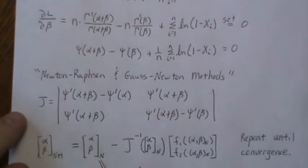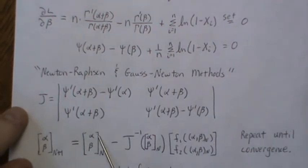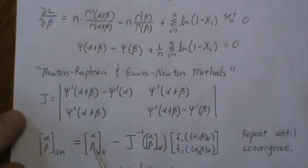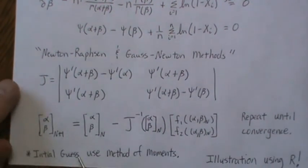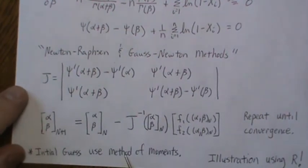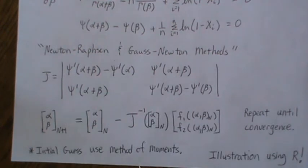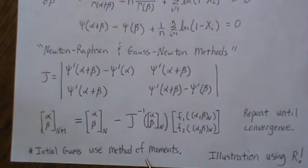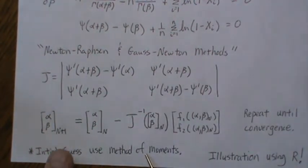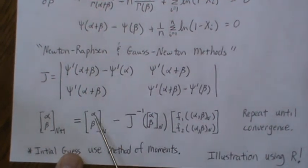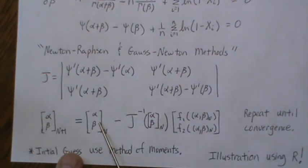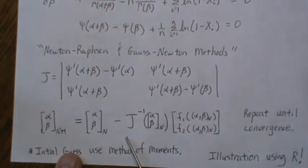Now, one approach is, how do we find our initial guess for alpha and beta? Well, one approach is to use the method of moments, and I have a video called Method of Moments Estimation for Beta Distribution. And there, we're going to use that method to come up with an initial guess for alpha and beta. And then you start this iterative process.